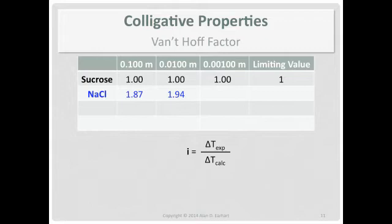Look what happens with the 0.001. What are these three values approaching? How many ions are in sodium chloride? Sodium ion, chloride ion, right? They're approaching two. They're approaching the number of ions in solution.